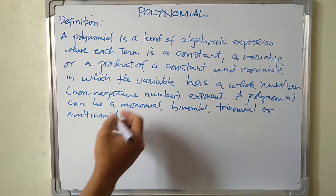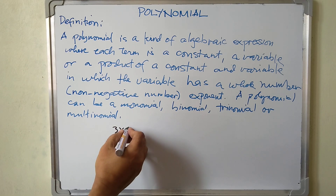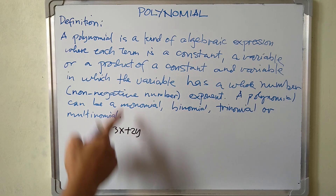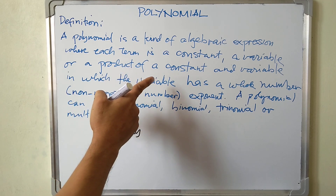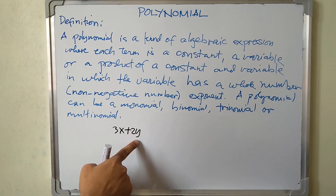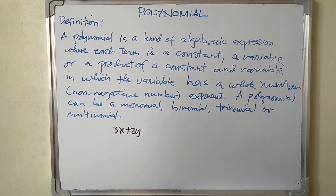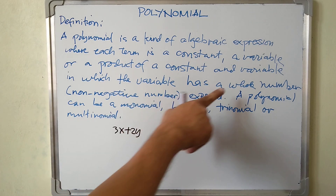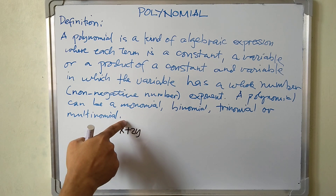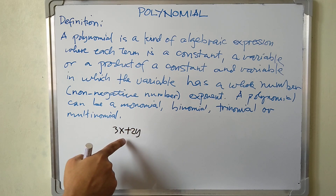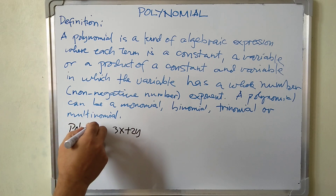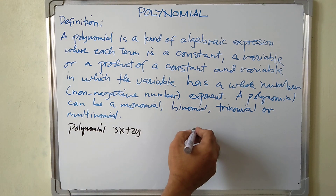Let's have an example of a polynomial algebraic expression: 3x + 2y. Each term is a constant, a variable, or a product of a constant and variable. Here 3x is a product of a constant and variable, and 2y is another such product. The exponent of x is 1 and the exponent of y is 1, both whole numbers, therefore this is a polynomial.